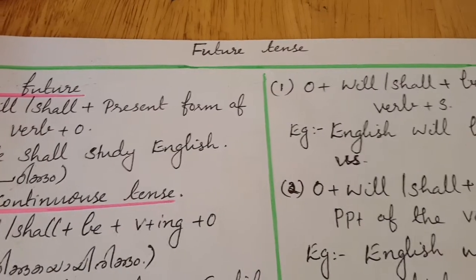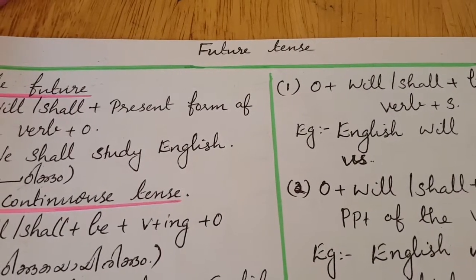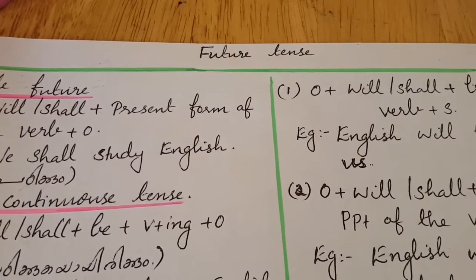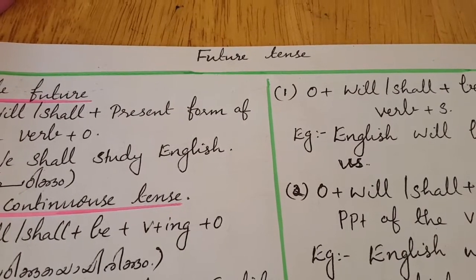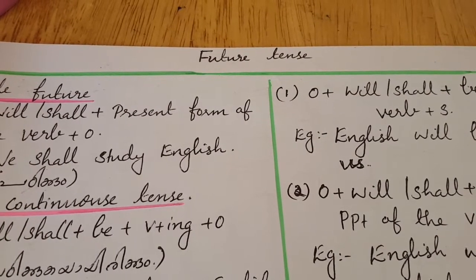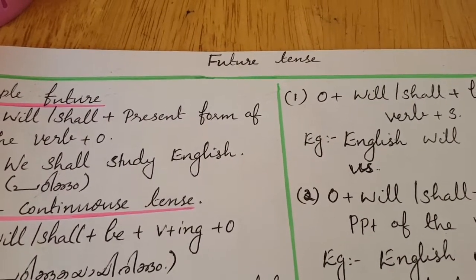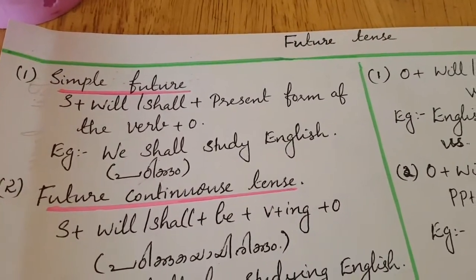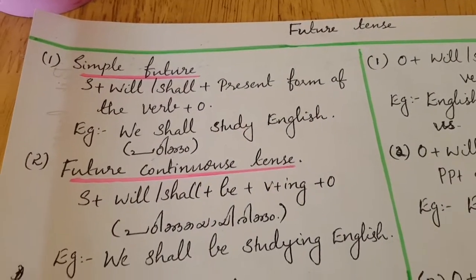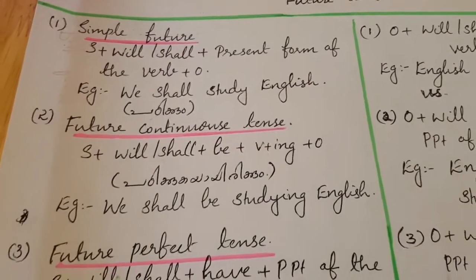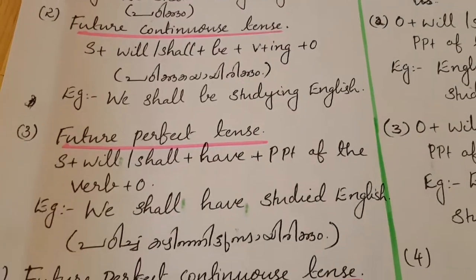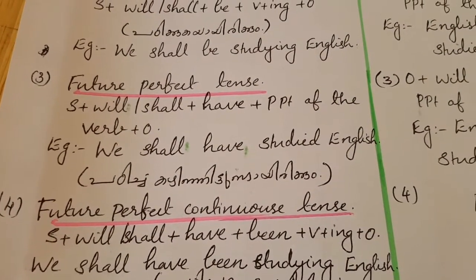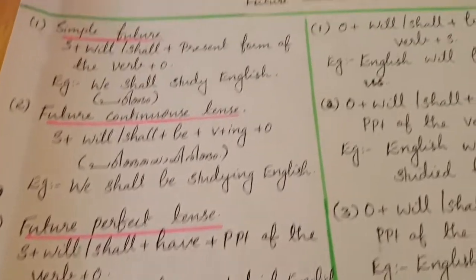Next is future tense. We have already seen present tense and past tense. So the third one is future tense. The first one is simple future, the second one is future continuous tense, the third one is future perfect tense, and the fourth one is future perfect continuous tense.